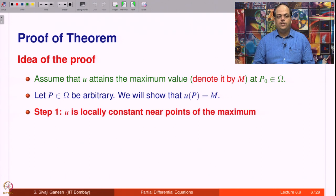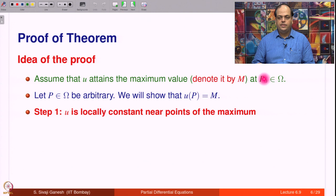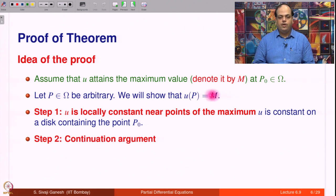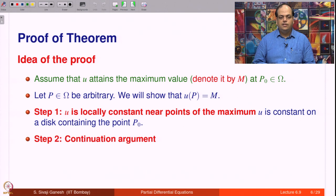Step 1: u is locally constant near points of the maximum. We are assuming the maximum is attained at p₀. The meaning of 'locally constant near points of maximum' is that there is a disk around p₀ on which u is constant and that constant is M. Step 2 is a continuation argument. We have shown in step 1 that u is constant in a disk around p₀, but we want to show u(p) = M. The natural idea is to go from p₀ to p using a curve and show that all along the curve u equals the constant M.